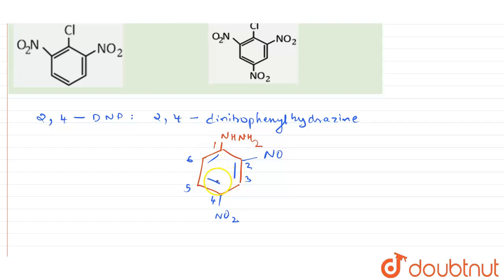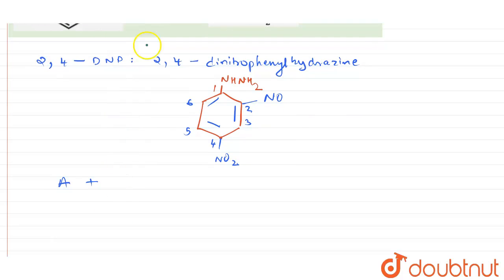So this is the structure for 2,4-dinitrophenyl hydrazine. So how this molecule can be prepared with a starting material A plus hydrazine hydrate is present. Hydrazine hydrate is H2N-NH2. How this 2,4-DNP can be prepared, that is asked.